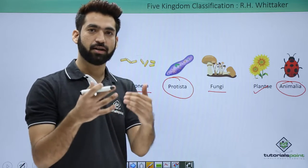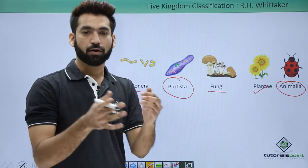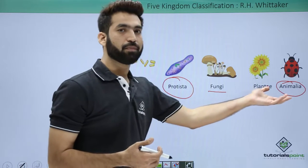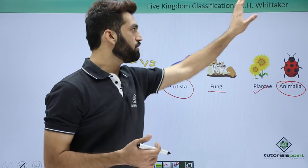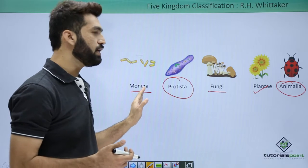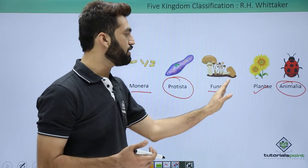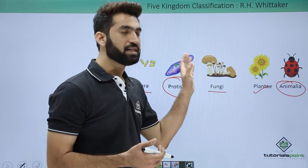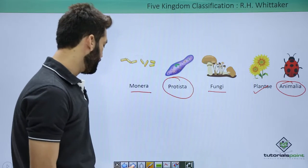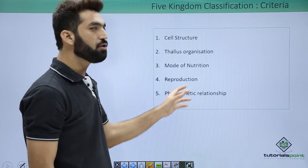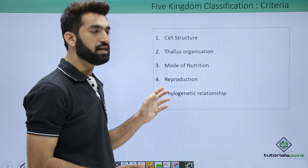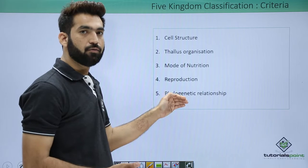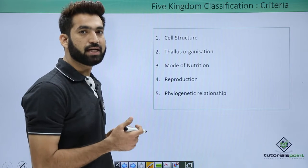He started defining differences at each level and placed organisms into different kingdoms. The five kingdoms are: kingdom Monera, kingdom Protista, kingdom Fungi, kingdom Plantae, and kingdom Animalia — the five kingdom classification system proposed by R.H. Whittaker. An important question arises: what are the criteria Whittaker used for classification?